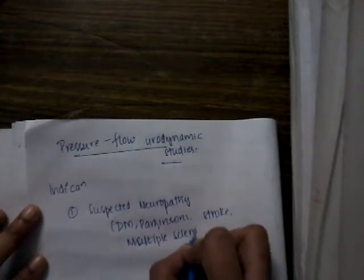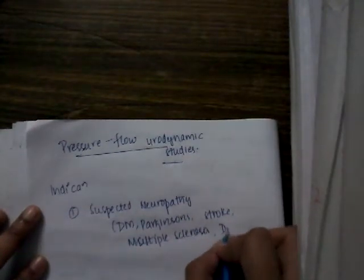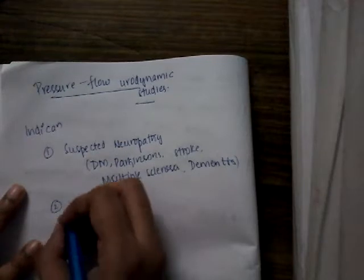What neuropathies are we thinking of? Diabetes mellitus, Parkinson's, stroke, multiple sclerosis, or dementia. For all these cases you should do these pressure flow studies.